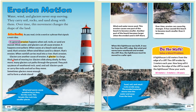Glaciers are another cause of erosion. A glacier is a large, thick sheet of moving ice. Glaciers slide along slowly. As they move, many glaciers cut paths through the ground. They pick up pieces of weathered rock, sand, and soil. Glaciers push or carry the rocks and soil as they move. Sometimes glaciers move enough soil to form a whole island.